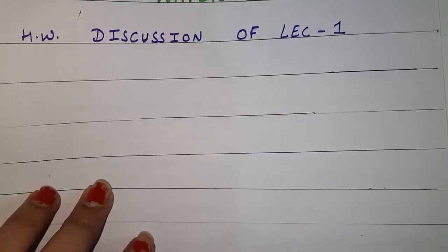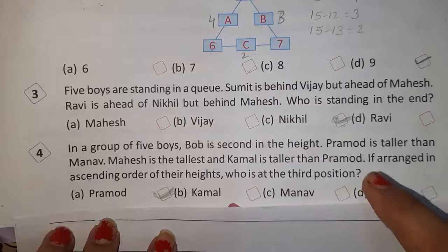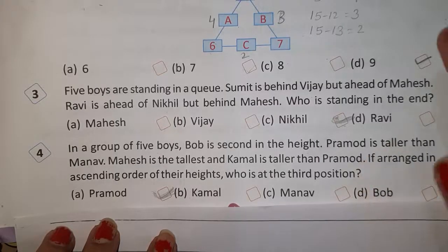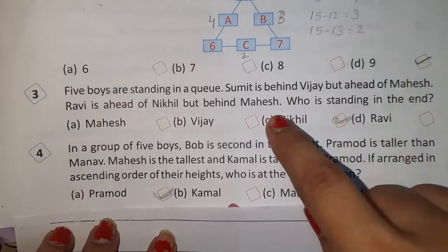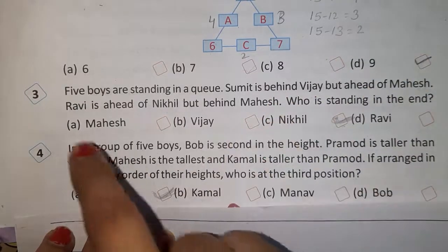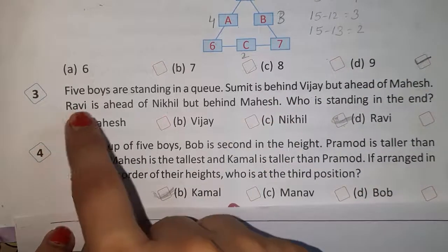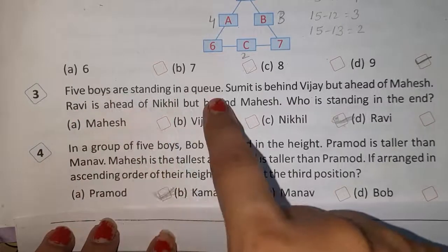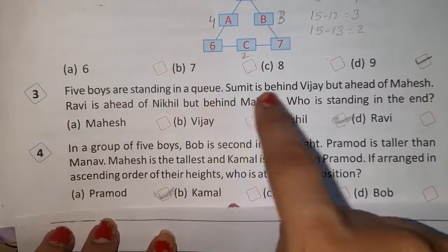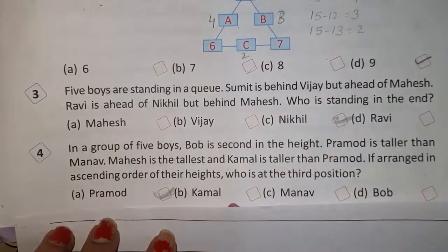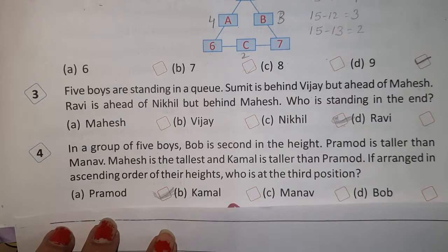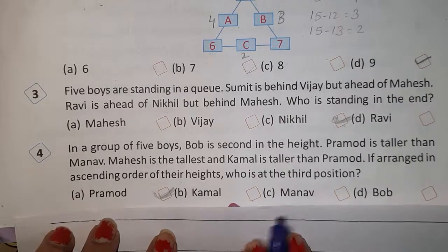Now we will do the homework discussion of lecture 1 — Mental Ability lecture 1. Questions 1 and 2 were explained as examples, and questions 3 to 7 were given as homework. So question 3: five boys are standing in a queue. Sumit is behind Vijay.